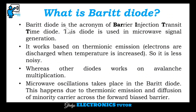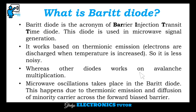What is BARITT Diode? BARITT Diode is the acronym of Barrier Injection Transit Time Diode. This diode is used in microwave signal generation. It works based on thermionic emission — that is, electrons are discharged when the temperature is increased. It is less noisy, whereas other diodes work on avalanche multiplication.